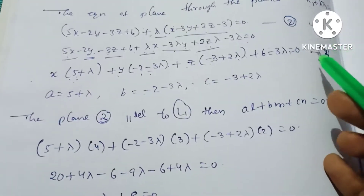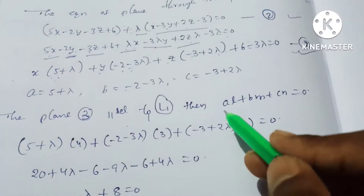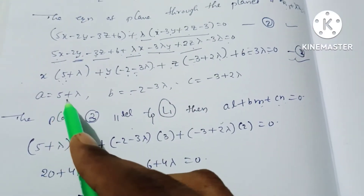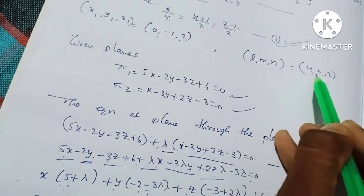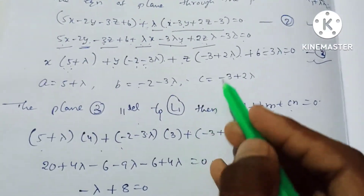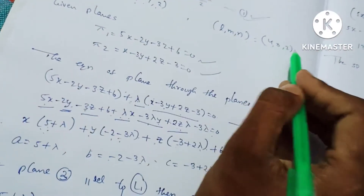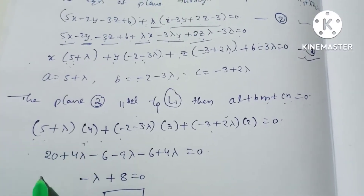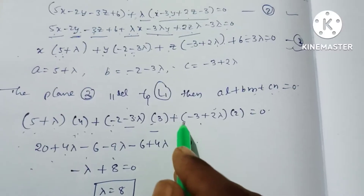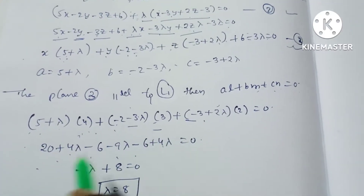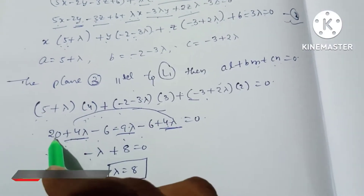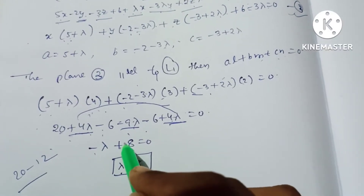Plane 3 is parallel to Line 1, so using the condition al + bm + cn = 0, where l, m, n equal a, b, c, we substitute: (5+λ)(4) + (-2-3λ)(3) + (-3+2λ)(2) = 0. This gives 20 - 6 - 6 = 8, and 4λ - 9λ + 4λ = -λ. So -λ + 8 = 0.